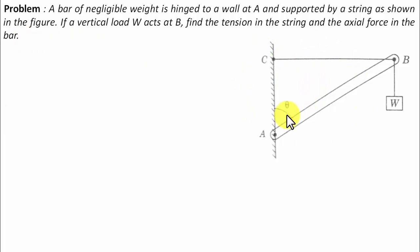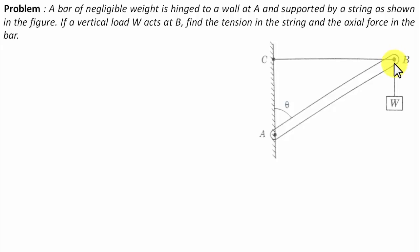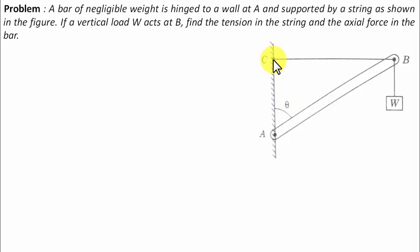This is the entire arrangement. There is a bar AB — one end of the bar is hinged at point A onto the wall. At the other end, that is at point B, a weight W is acting in the vertically downward direction. There is a string BC which tries to hold this bar AB in position, maintaining some angle theta with the vertical.